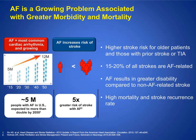Atrial fibrillation is a growing problem associated with greater morbidity and mortality. There is a higher risk of stroke for older patients, especially those with a history of stroke or TIA. Approximately 15 to 20 percent of all strokes are related to atrial fibrillation. The strokes that result are usually more morbid — they cause greater disability than non-atrial fibrillation-related strokes. There is a five times greater risk of stroke in patients with atrial fibrillation.